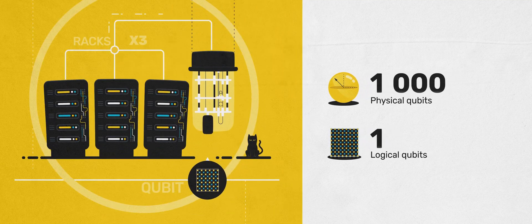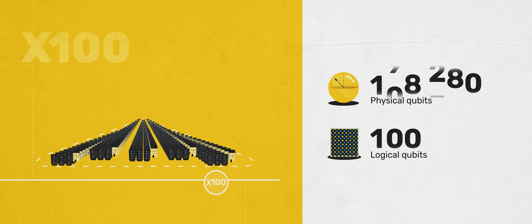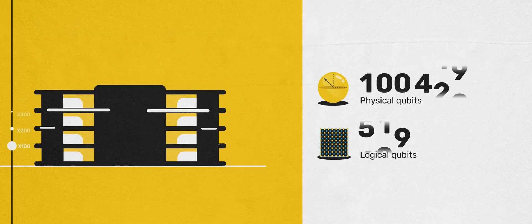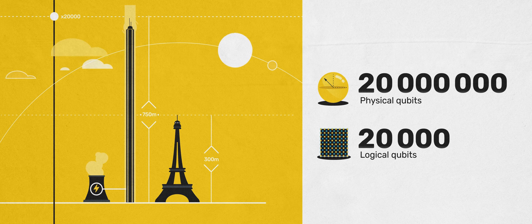The infrastructure to control a single logical qubit is already large, and you would need hundreds of logical qubits for the first useful applications in fundamental research in physics or chemistry. But for truly groundbreaking applications, you would need tens of thousands. The engineering and financial challenge becomes almost unbearable at this point.